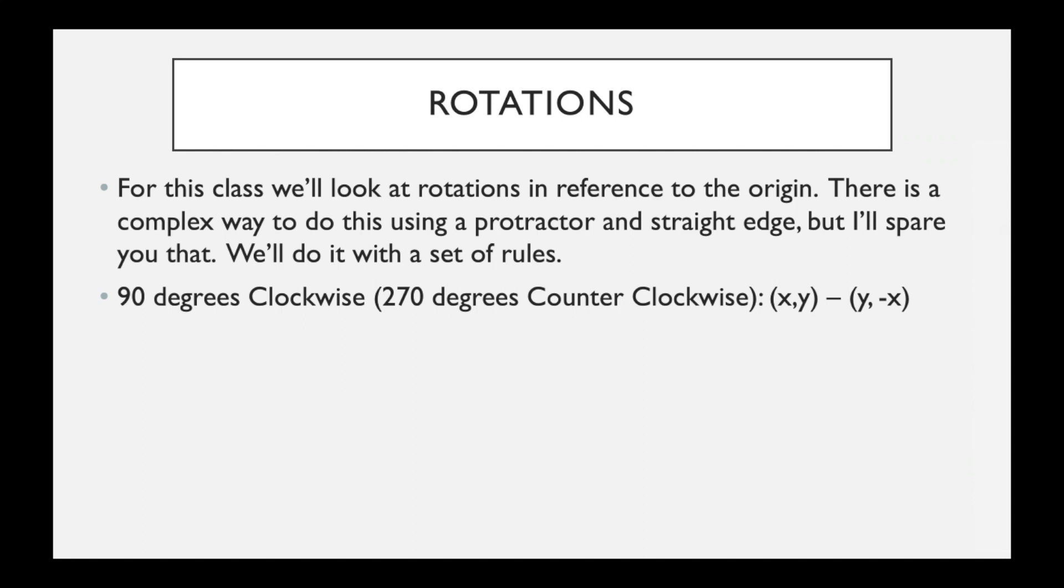You need to make sure that you have these rules written down somewhere in your notes, because they're going to come in very handy as we go. The first one, if you want to do a 90 degree clockwise rotation, clockwise meaning as a clock rotates to the right, which is the same thing as a 270 degree counterclockwise rotation. Make sure that you're paying attention to not only the degree number of the rotation, but the direction in which the rotation is happening.